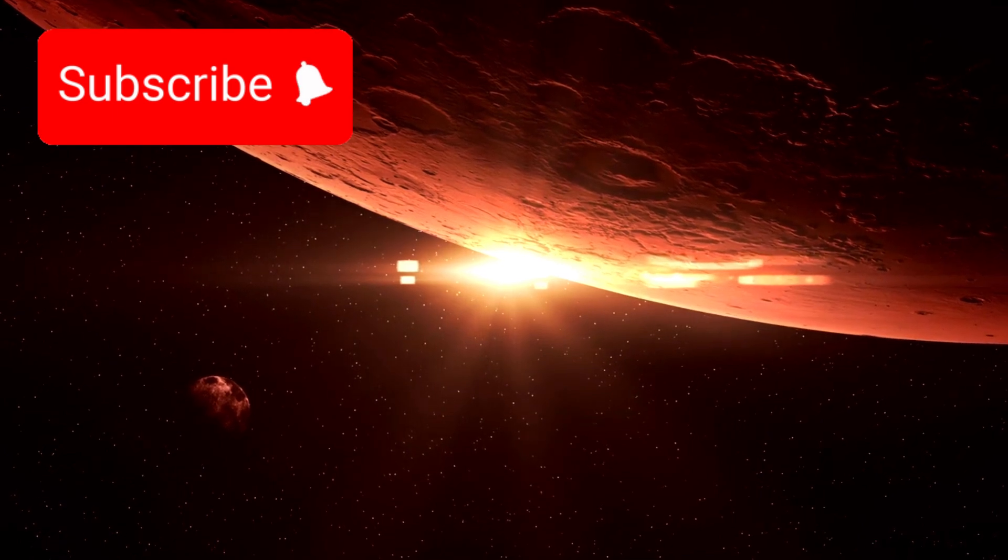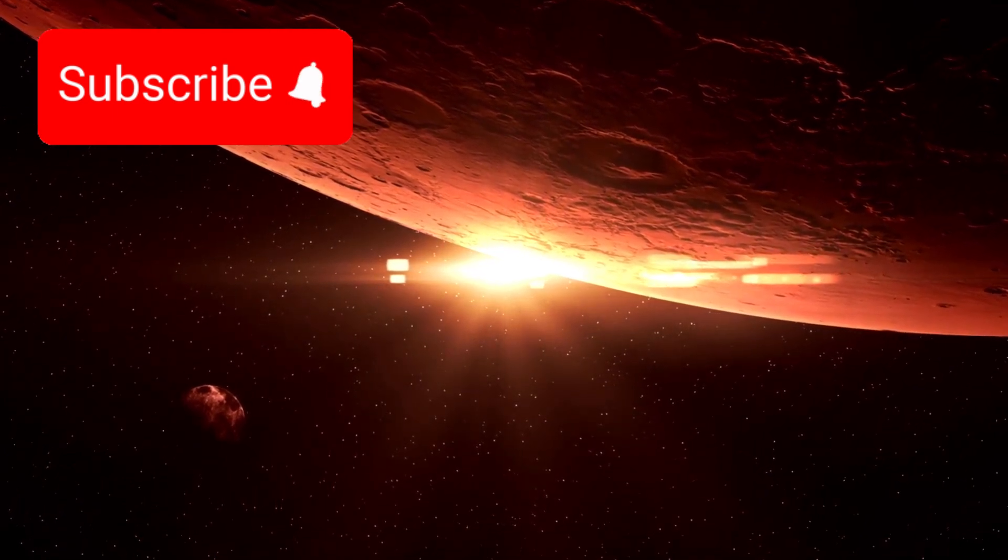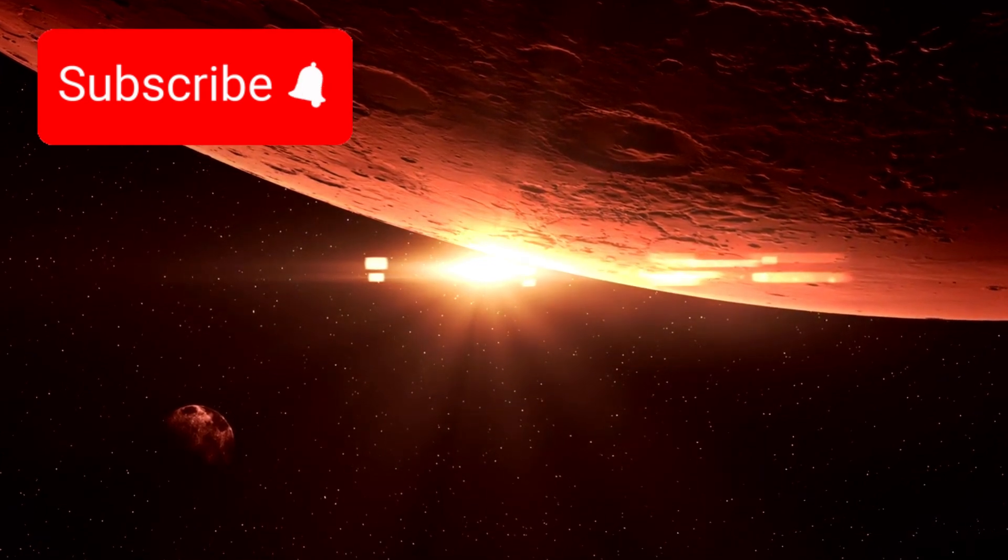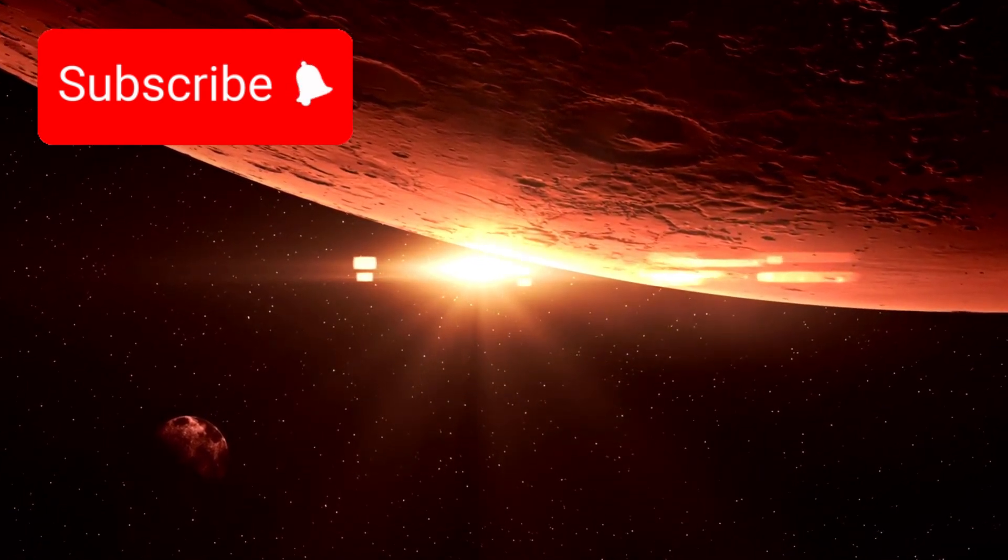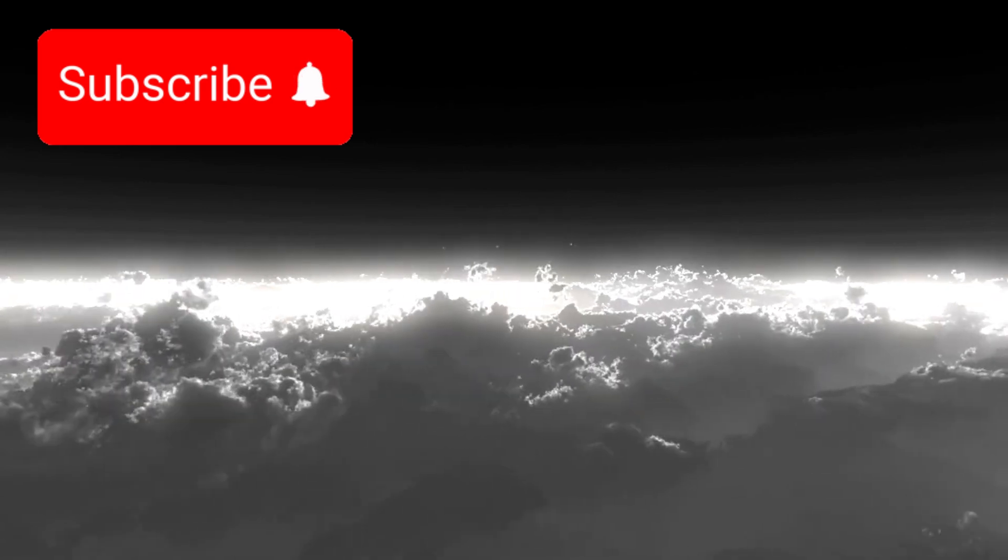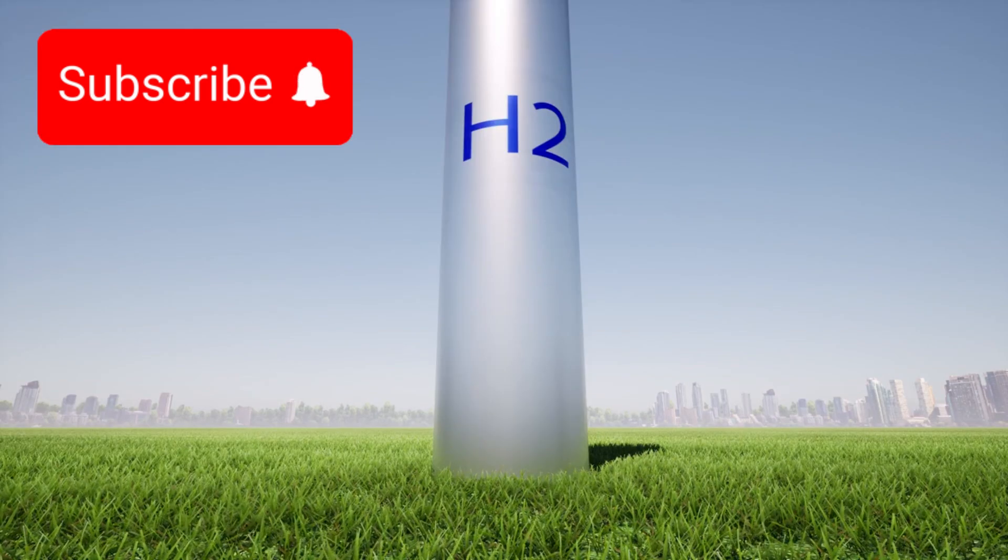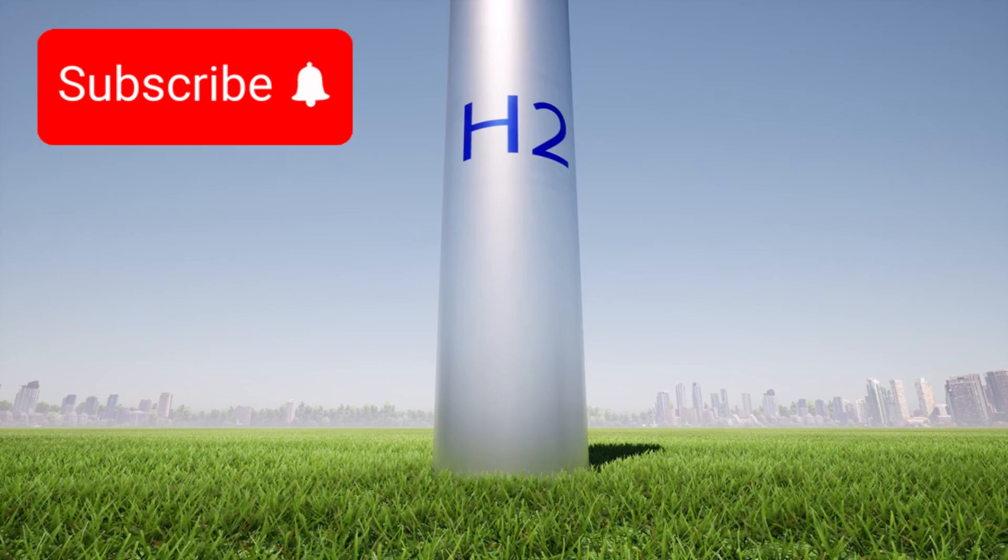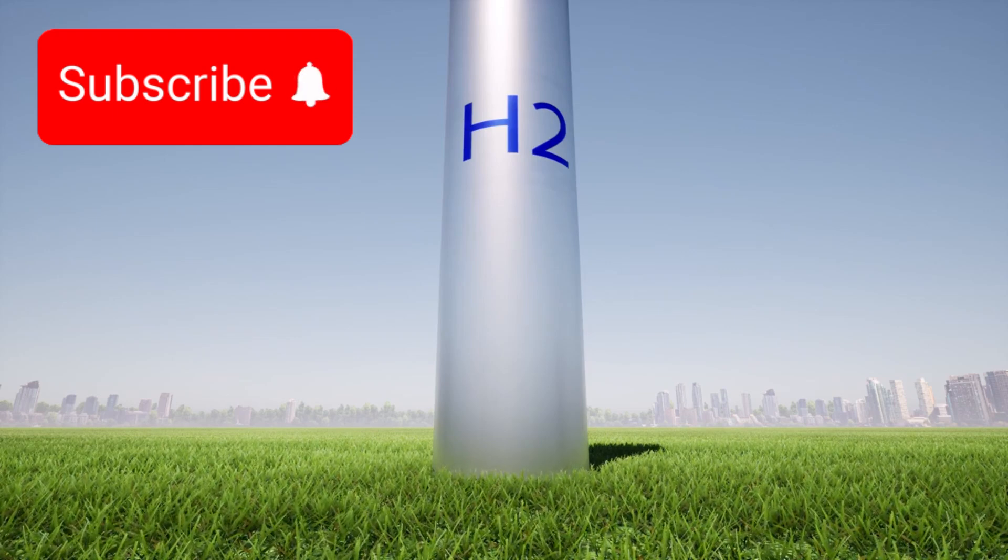This is especially puzzling because red dwarf stars like K218b typically send out intense radiation, often stripping nearby planets of their atmospheres. But K218b appears to be holding onto its air, raising hope that conditions there might be more stable than expected. It might have a hydrogen-rich atmosphere that helps trap heat and keep oceans warm enough for life to thrive, though possibly warmer than Earth.